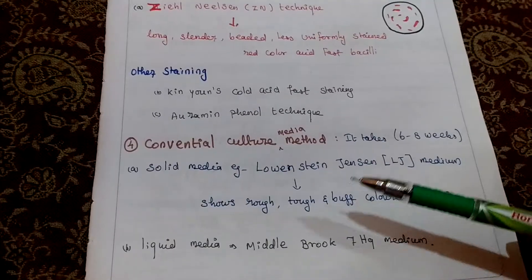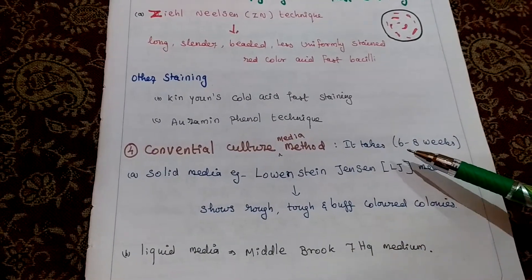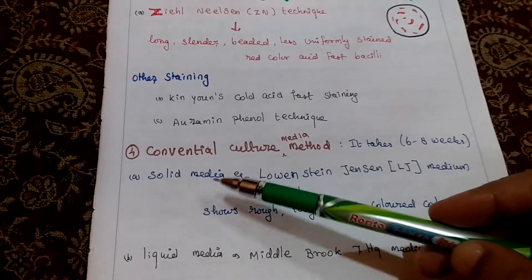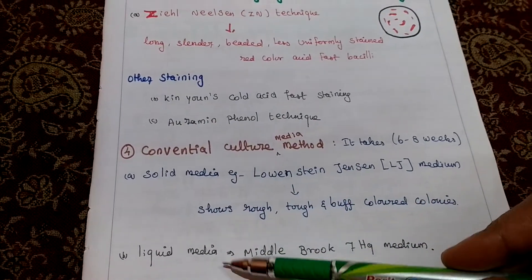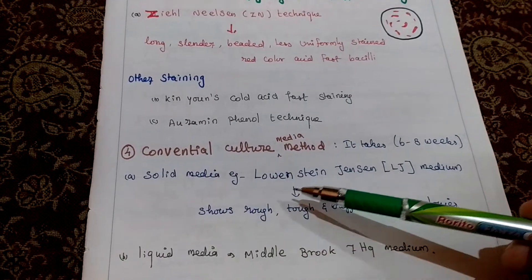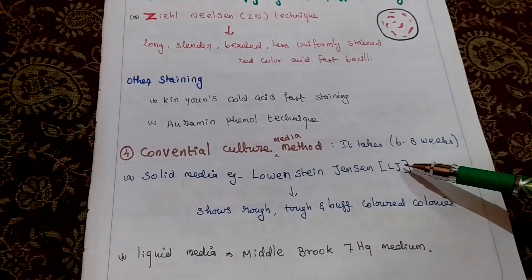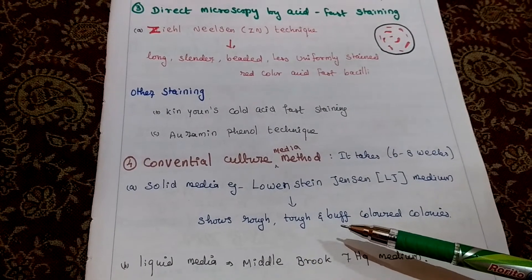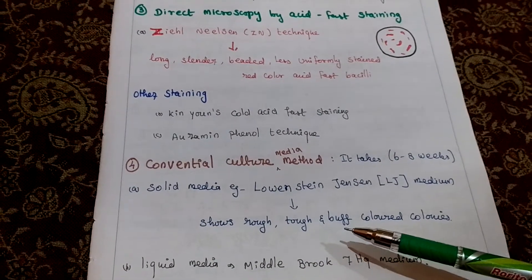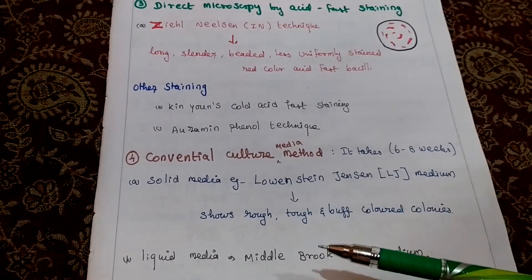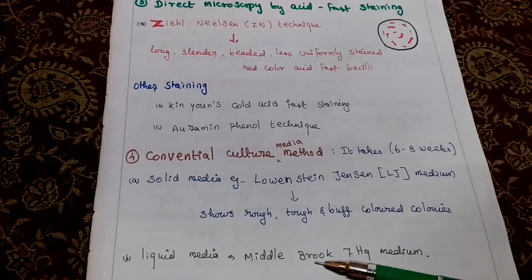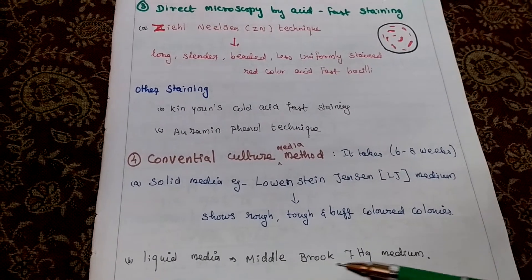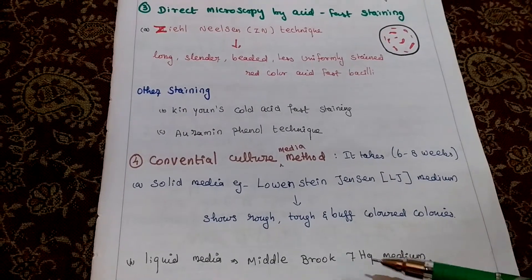The fourth method is the culture method, which takes 6 to 8 weeks. Two types of media are used: solid medium and liquid medium. For solid medium, we use Lowenstein-Jensen medium — LJ medium — which produces rough, tough, buff colonies, where buff means creamy-colored colonies. For liquid medium, we use Middlebrook 7H9 medium.